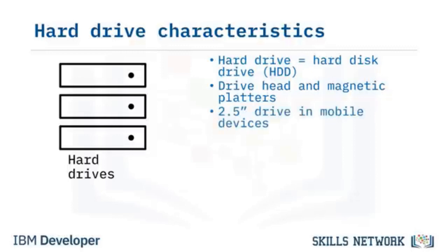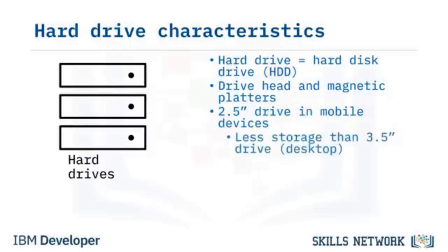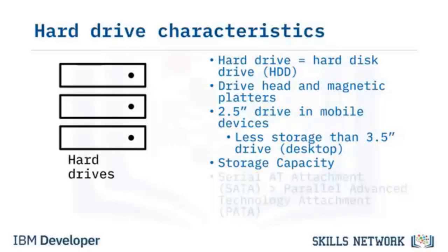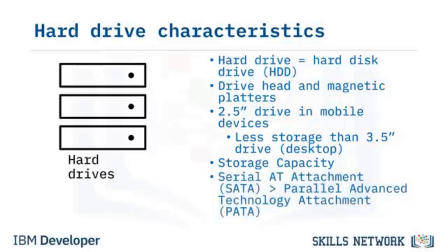Hard drives work by a drive head reading and writing data to magnetic platters. The 2.5-inch HDD is used in notebook computers and mobile devices, trailing 3.5-inch desktop drives in capacity. Standard desktop drives range from 500GB to several terabytes. SATA, or Serial Advanced Technology Attachment, is the most common hard drive type for modern computers, though many motherboards also support the slower PATA drives.